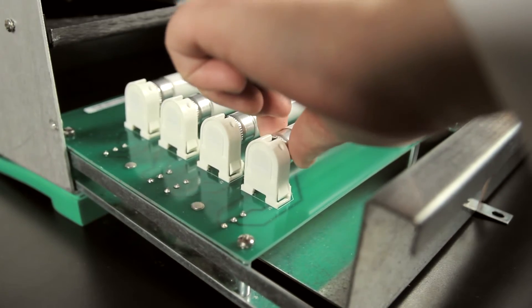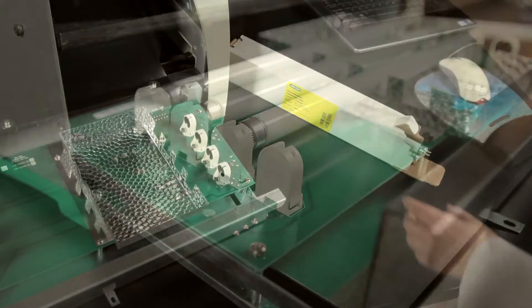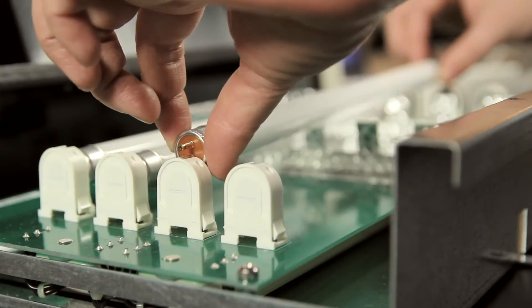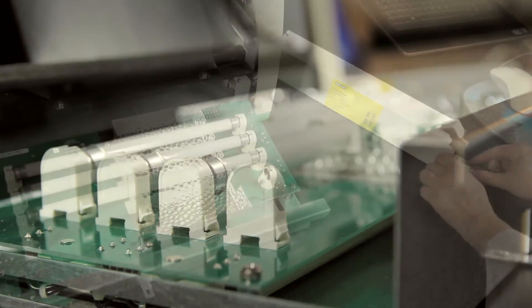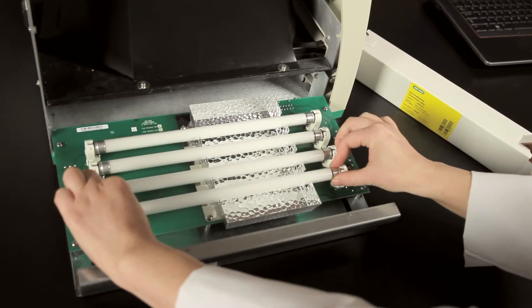Remove the lamps by twisting counterclockwise and slip them out of position. Replace each of the lamps and twist clockwise to lock them in place. And remember, even though only one lamp might have burned out, it's best to replace all the lamps at the same time to provide even illumination for gel images.